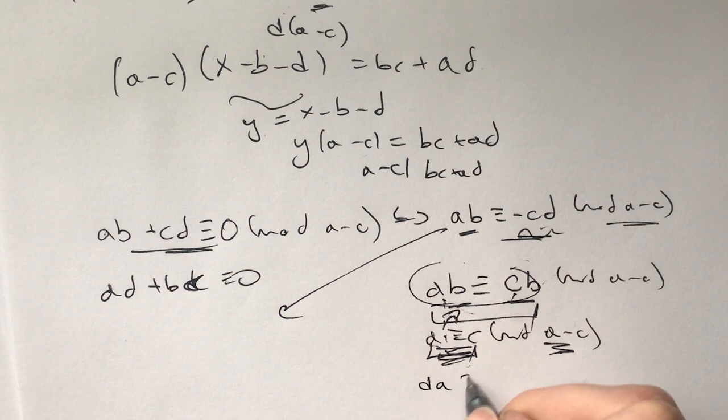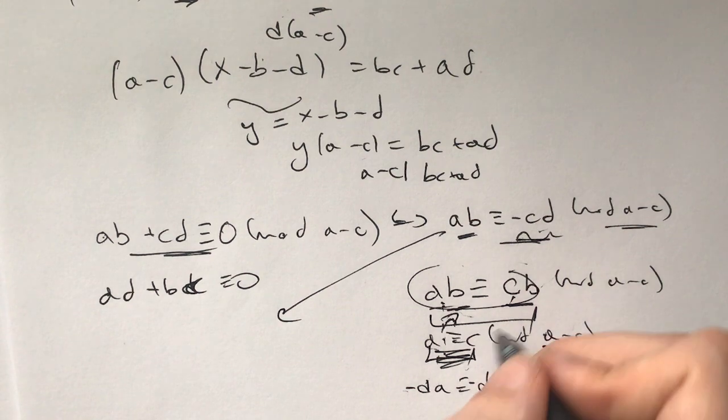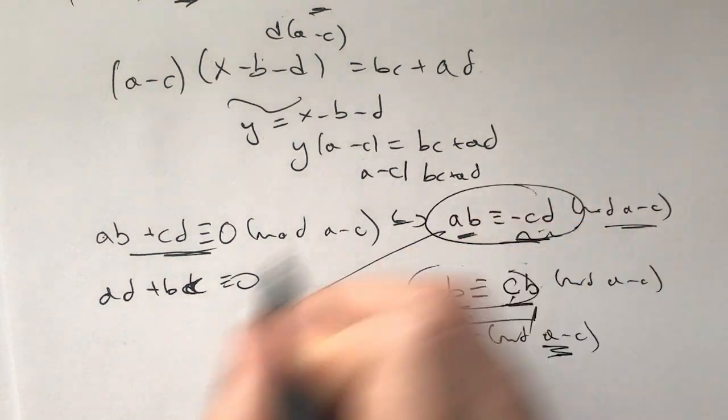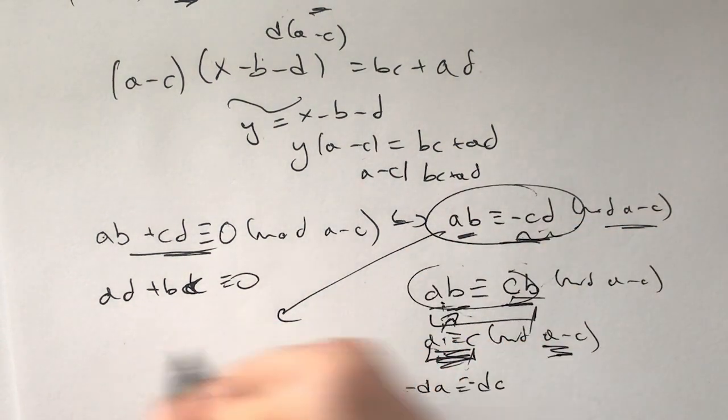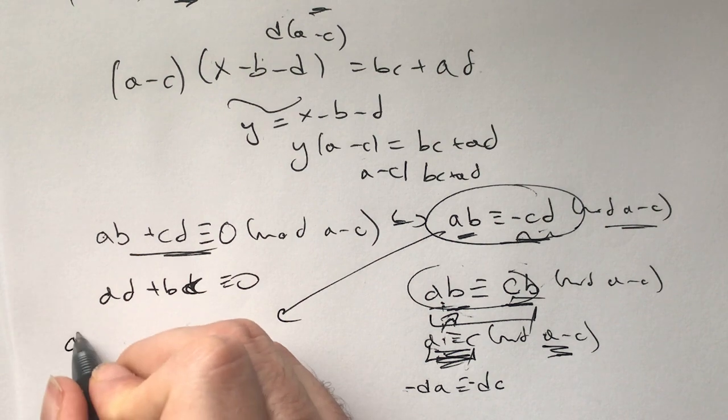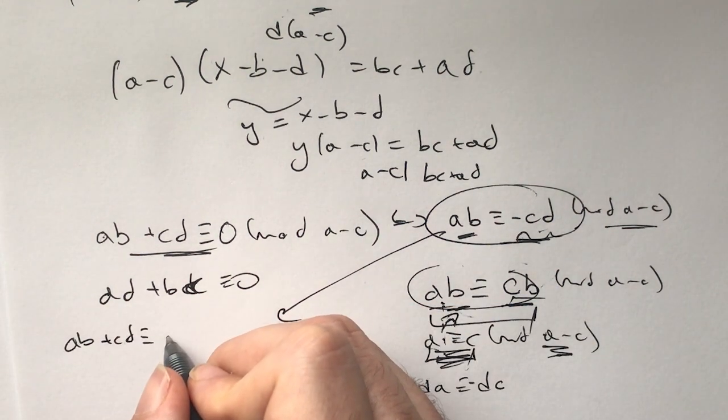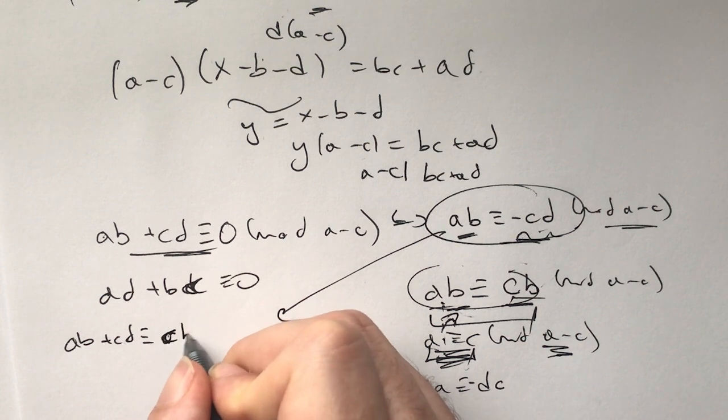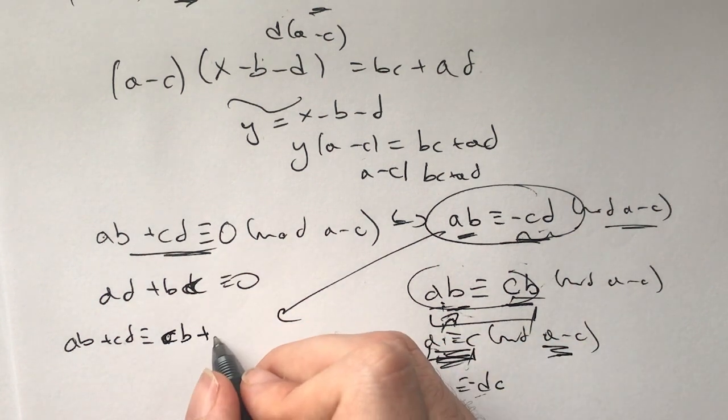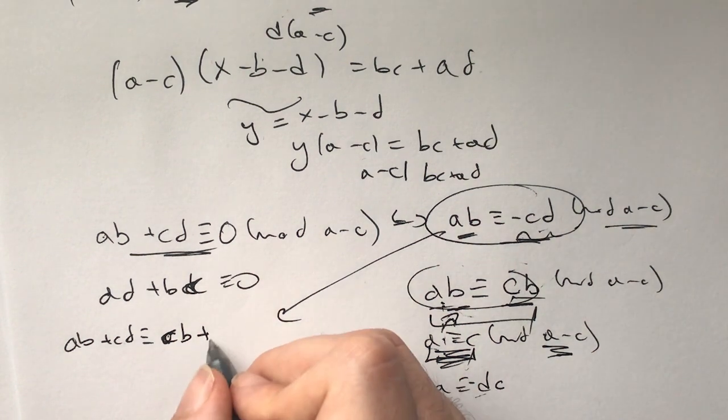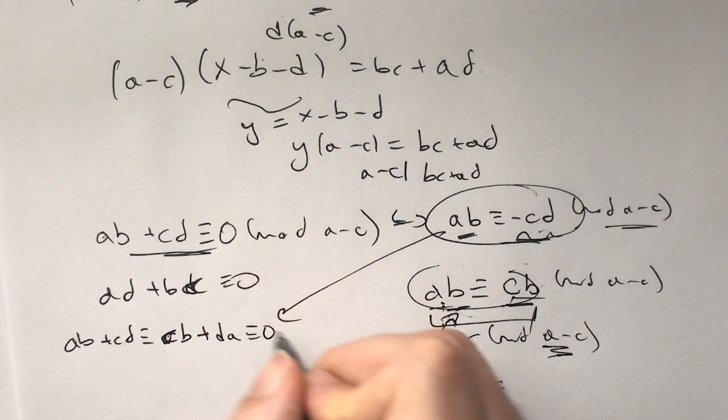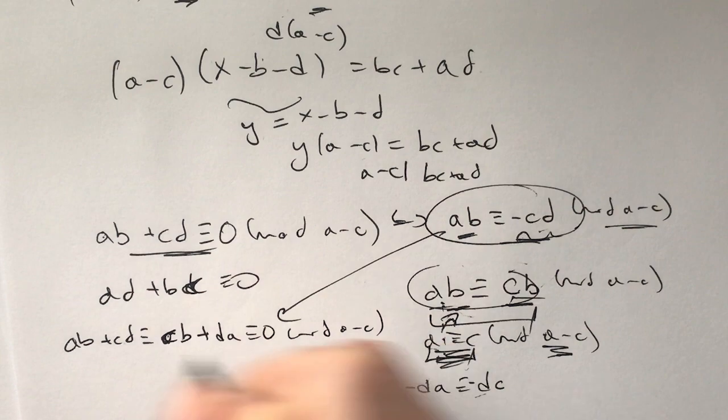And similarly, if you multiply both sides by d, you'll get that da is dc modulo (a-c). So using these modulars, what you have is ab plus cb is congruent to cb plus cd, so it's plus da. Then this is congruent to 0 modulo (a-c) because this is congruent to 0, so we're done.